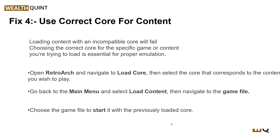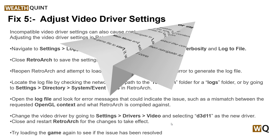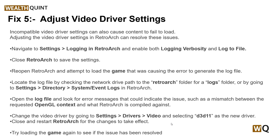The fourth step is to use the correct core for your content. Loading content with an incompatible core will fail — choose the correct core for the specific game or content you are trying to load. Open RetroArch and navigate to Load Core, then select the core that corresponds to the content you wish to play. Go back to Main Menu, select Load Content, navigate to your game files, and choose the game file to start it with the previously loaded core.